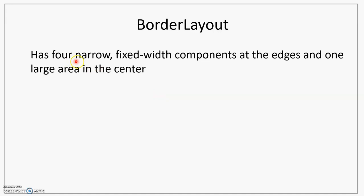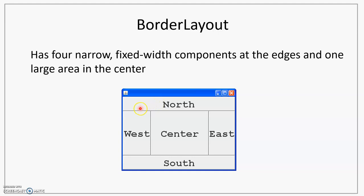Next is BorderLayout. BorderLayout has four narrow fixed-width components at the edges and one large area in the center. At the edges, you have four sections: north, west, south, and east. In the center, there is a large area which you can use. In each of these sections, you can place components.